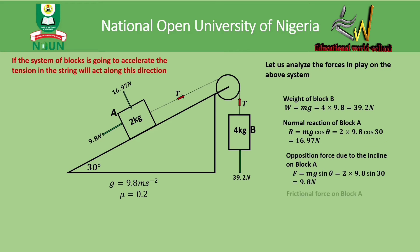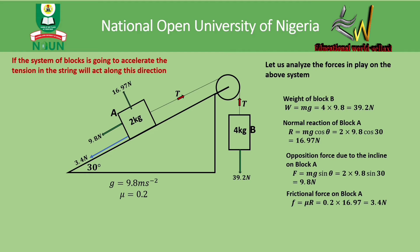The frictional force is the last force affecting block A. It is obtained by multiplying the coefficient of friction by the normal reaction. Substituting the values, the frictional force is 3.4 newtons. So those are all the forces in play, and we will now resolve these forces to find the tension and acceleration.